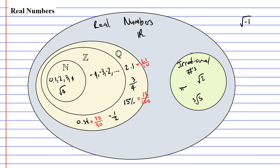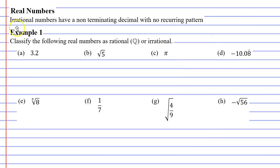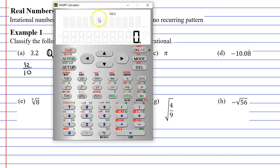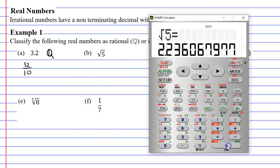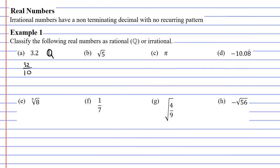I did promise you that I would go through example one, so we'll do that now. It says that we need to classify the following real numbers as either rational or irrational. Starting with question A: 3.2. We can classify this as being rational — we use the symbol Q. The reason it's rational is because it can be represented as a fraction: 3.2 can be written as 32 over 10. Now looking at question B, I'm going to use the calculator. The square root of 5 — notice that I get a number that goes on forever, it doesn't terminate, and there's no recurring decimal. So this one has to be irrational.